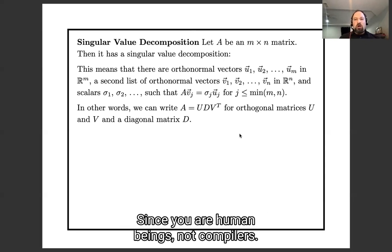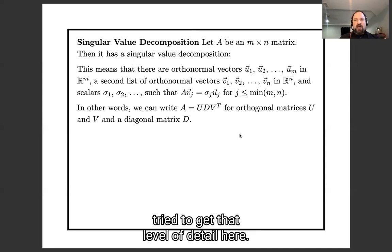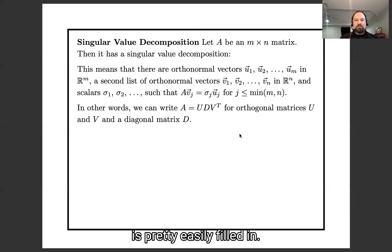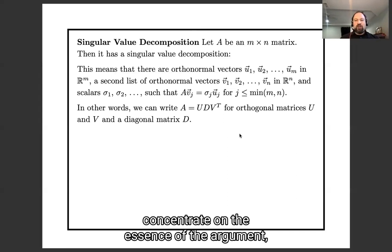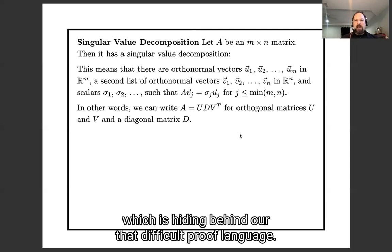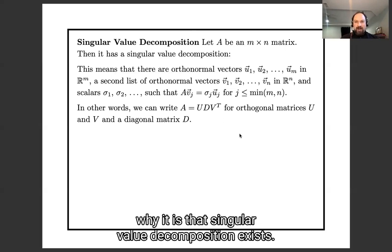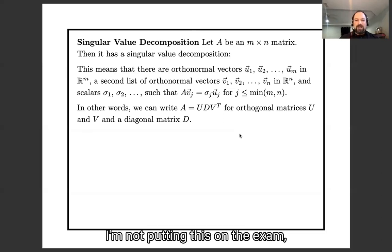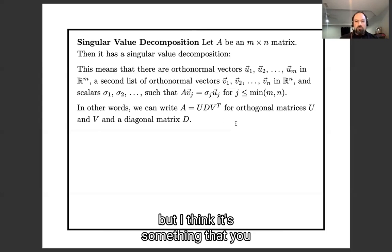Since you are human beings, not compilers, I have not tried to get that level of detail here. But everything I'm glossing over is pretty easily filled in. What I've tried to do is concentrate on the essence of the argument, which is hiding behind all that difficult proof language. I've tried to explain the essence of why singular value decompositions exist. This is an optional lecture — I'm not putting this argument on the exam — but I think it's something you should try to understand.